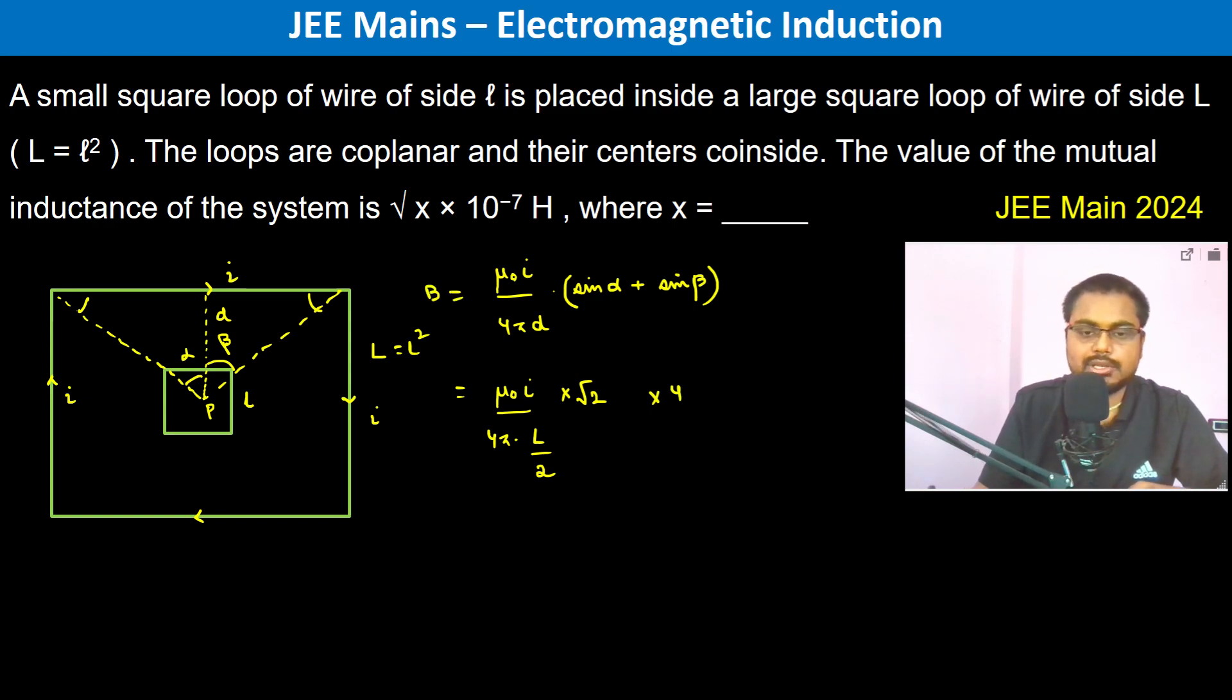Therefore, the magnetic field at the center is this. Now, the flux Φ equals B·A, which should equal M·I. B·A we know, and this is mutual inductance times current I. So now we write this.